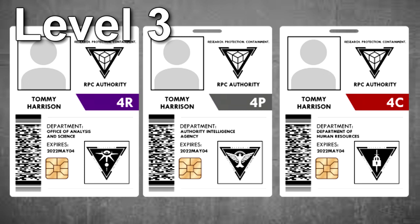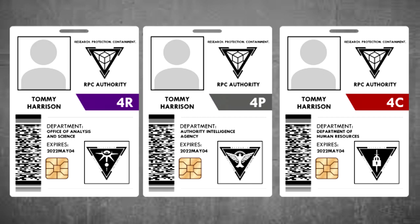Level 3 security clearance is a senior access level given to personnel who require direct access to anomalies, as well as in-depth information regarding the background, circumstances, and long-term contingency planning surrounding anomalies within containment. Personnel designated Level 3 are often assigned to administrative staff, senior research staff, senior security staff, and mobile specialized team operators.